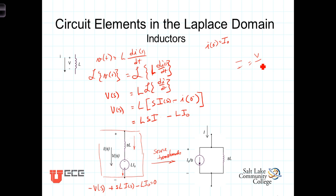Current equals voltage divided by impedance. The current value here would be the voltage, which was L I naught, divided by S times L. The Ls cancel, and we end up with a current source equal to I naught divided by S.